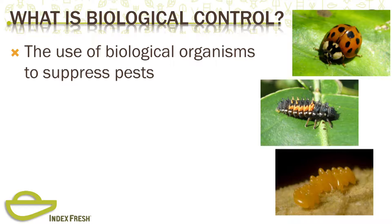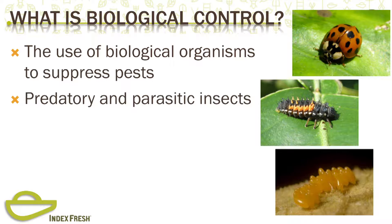Among the biological control organisms, probably the most commonly known are the predatory and parasitic insects. These insects make up the bulk of the commercially available biocontrol measures. I'm going to get into quite a bit of detail about them and specifically the ones we use in avocados.